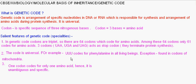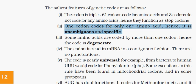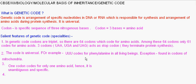So that's what is unambiguous and specific. Now coming to the next point, that is the code is degenerate. What does it mean? That one amino acid can be coded by more than one codons.